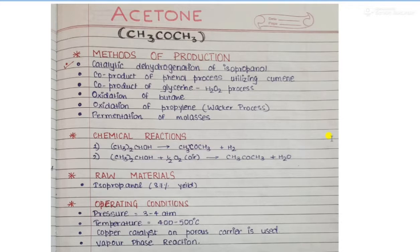The chemical reactions during this process are: CH3 twice CHOH gets converted to CH3COCH3 plus H2. That is, our isopropanol gets converted to acetone and hydrogen gas. Also, this other way in which the reaction can be carried is that our isopropanol can be added with oxygen to form acetone and water.